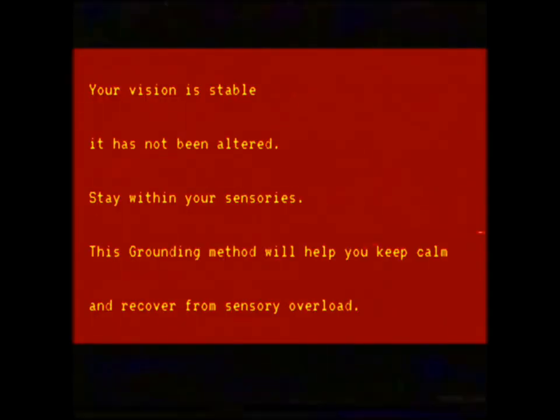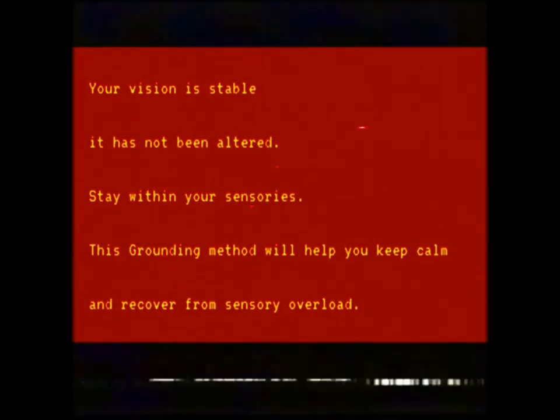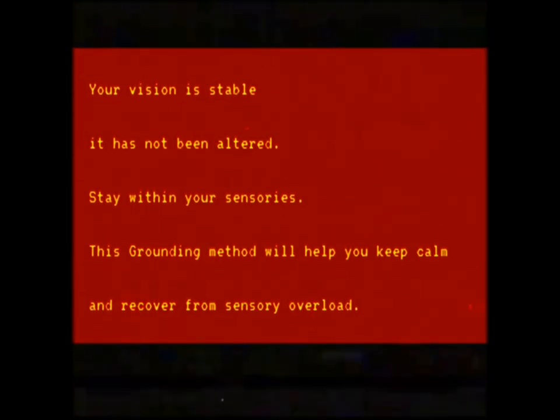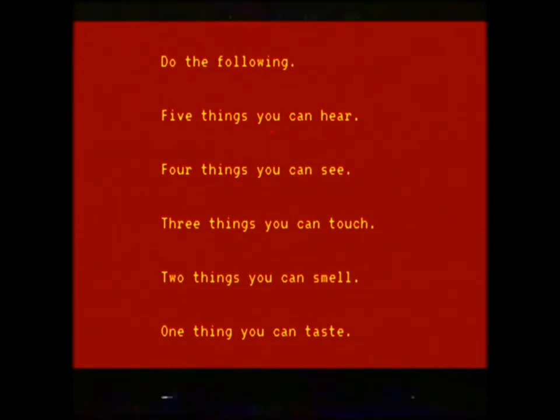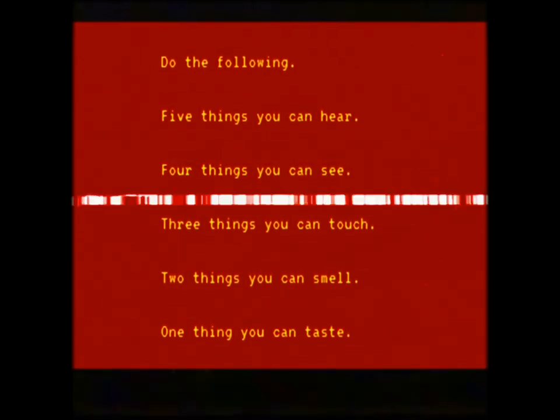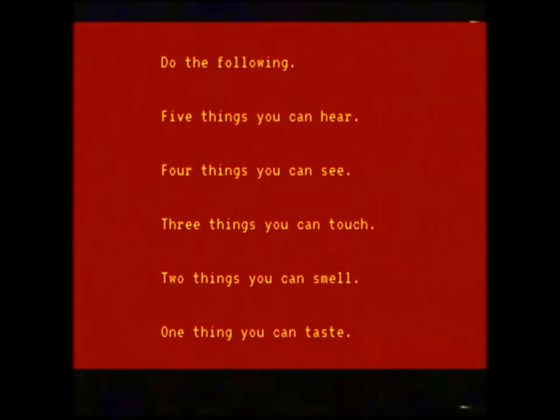Your vision is stable. It has not been altered. Stay within your sensories. This grounding method will help you keep calm and recover from sensory overload. Do the following: five things you can hear, four things you can see, three things you can touch, two things you can smell, one thing you can taste.